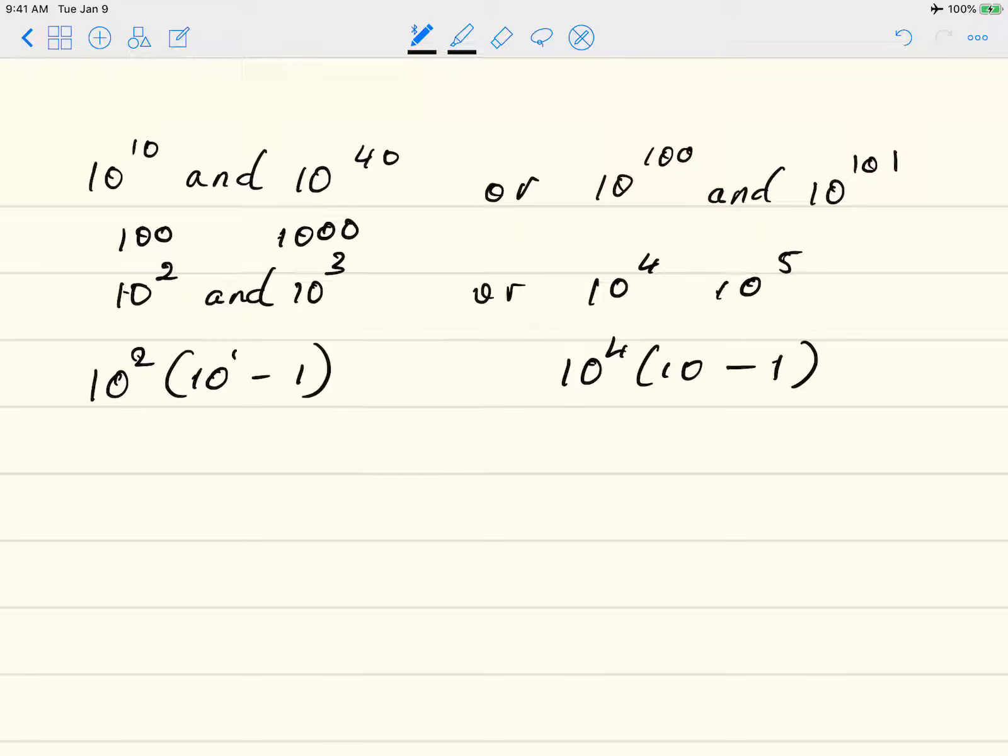So the way to determine this is to look at the factor that you pulled out, so 10 to the 2nd, 10 to the 4th. So clearly the 10 to the 4th shows that there's a larger gap. Sorry, 10 to the 4th and 10 to the 5th. So this tells us which one has a larger distance in between.